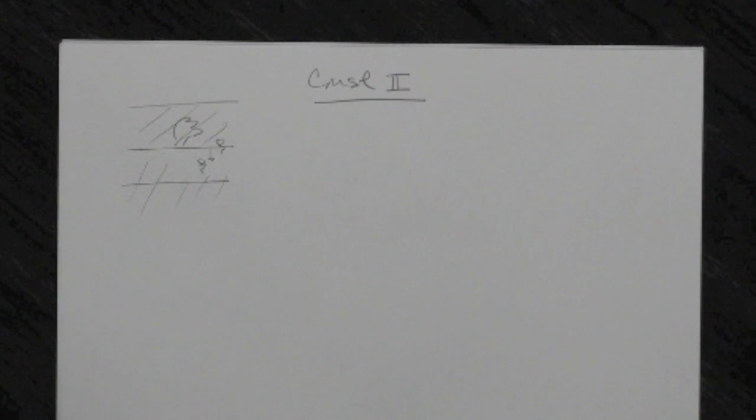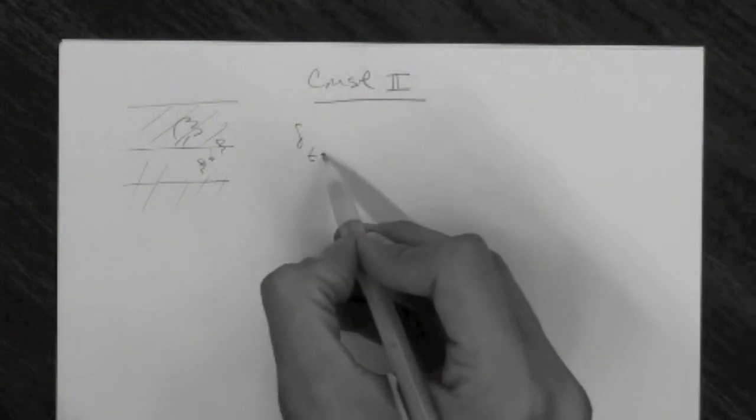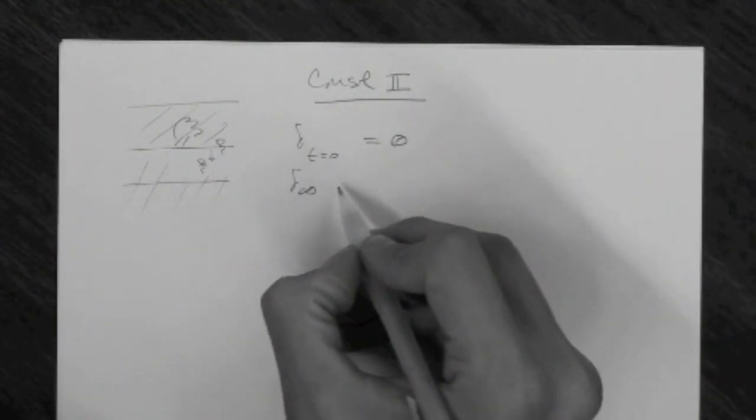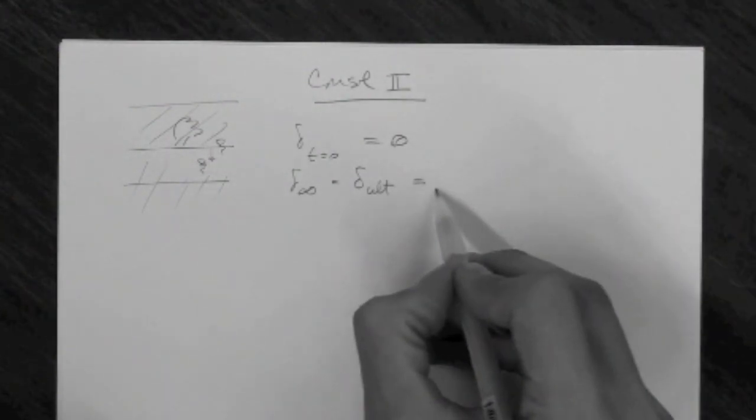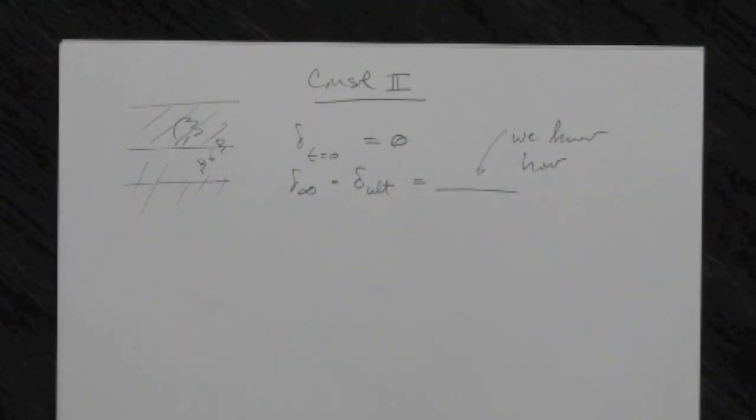So we need to make sure that we understand the process. Second, we need to make sure that we can calculate the ultimate settlement — the vertical deformation incurred by the consolidating soil at the end of consolidation. We know that the deformation at time equals 0 is 0 because no load has been imposed yet. And we know that the deformation at time equals infinity — also called delta ultimate — we know how to calculate it, given the conditions from previous examples where we take a specimen to the lab and determine the sigma p prime, c sub c, c sub r, and e0.